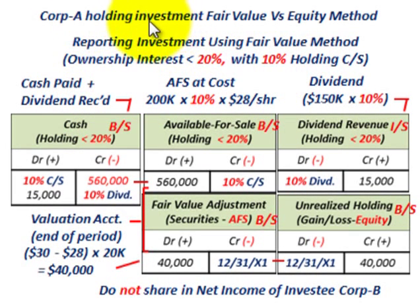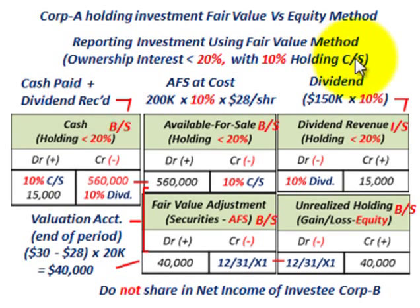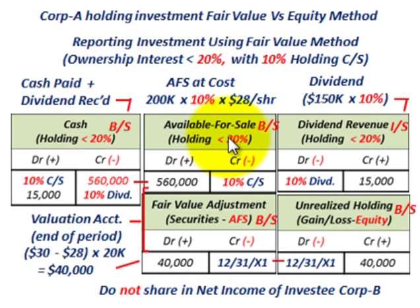We're going to be looking at the fair value versus the equity method for recording these investments. First, we're going to look at reporting the investment using the fair value method. This is where the ownership you have in the investee company is less than 20%. For our example, we're using a 10% holding of Corp B's common stock. In this case, you classify these securities as available for sale securities, and you set up an available for sale securities account. Since it's less than 20%, we record it at cost.